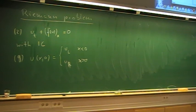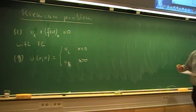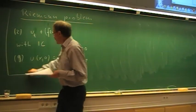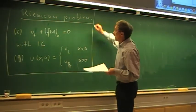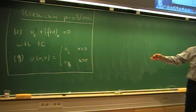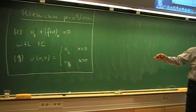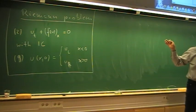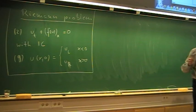We have a piecewise constant initial condition, and last time we already looked at the two possibilities. Either u_L is larger than u_R, then we get a shock, or we have u_L smaller than u_R, then we get a rarefaction wave. We shall look at that now in more detail.